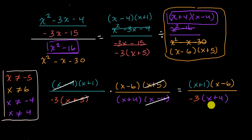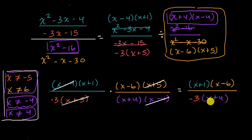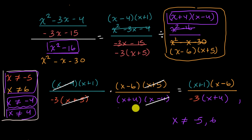So the way it's written now, it's clear that x cannot be equal to negative 4, so that information is already there in this reduced expression. But the other constraints have been lost. So if you want this expression to truly be equivalent to the original expression, you would also have to say x cannot be equal to negative 5, 6, or positive 4. You could include negative 4 as well, but that's already implicit in the expression.